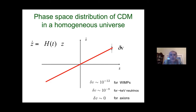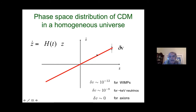Let's think about the distribution of cold dark matter in the universe. Start with a homogeneous universe of constant density. In two phase space directions — say z and its associated velocity — because of the Hubble flow, the velocity is proportional to distance and we have an inclined line. It has a certain thickness which is the velocity dispersion, very small for cold dark matter candidates: 10^-12 times the speed of light for WIMPs, 10^-8 for keV-mass neutrinos, and essentially zero for axions.